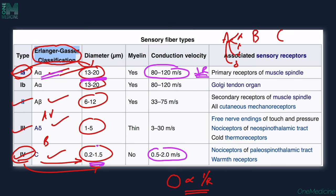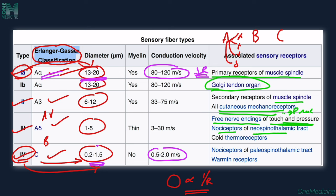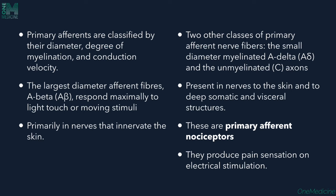Looking at what these fibers innervate: A-alpha fibers are associated with primary receptors in the muscle spindle and Golgi tendon organ. A-beta is present in muscle spindles and all cutaneous mechanoreceptors, including proprioceptors. A-delta covers free nerve endings for touch, pressure, and nociceptors of the neospinothalamic tract and cold thermoreceptors. Type C fibers are nociceptors of the paleospinothalamic tract and warmth receptors.